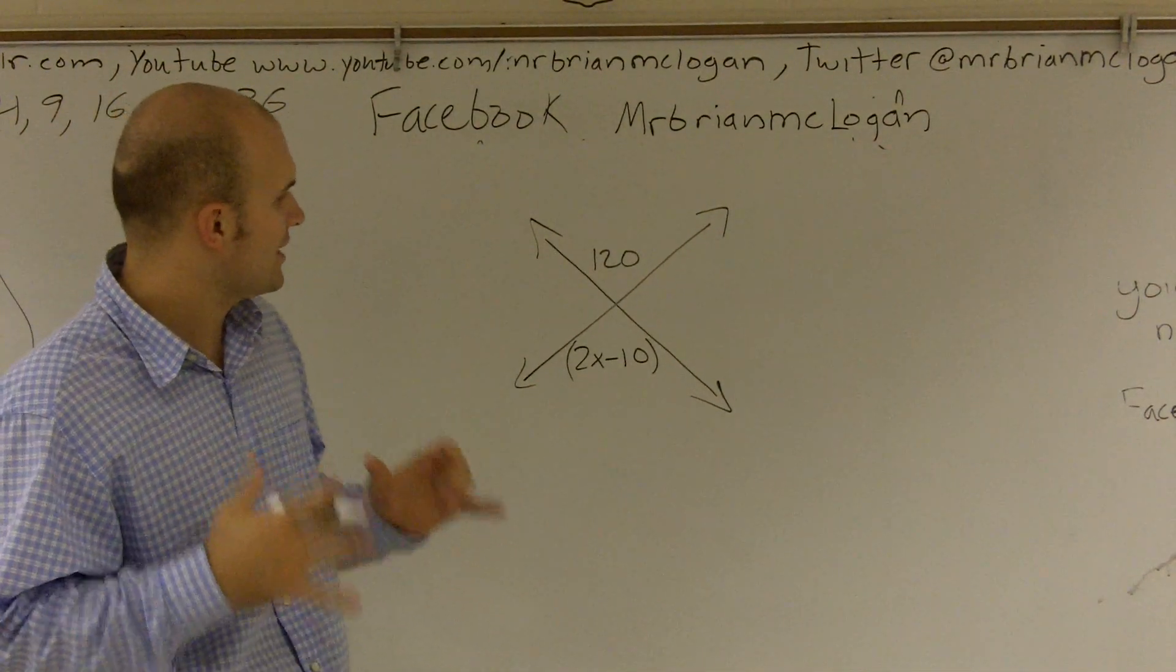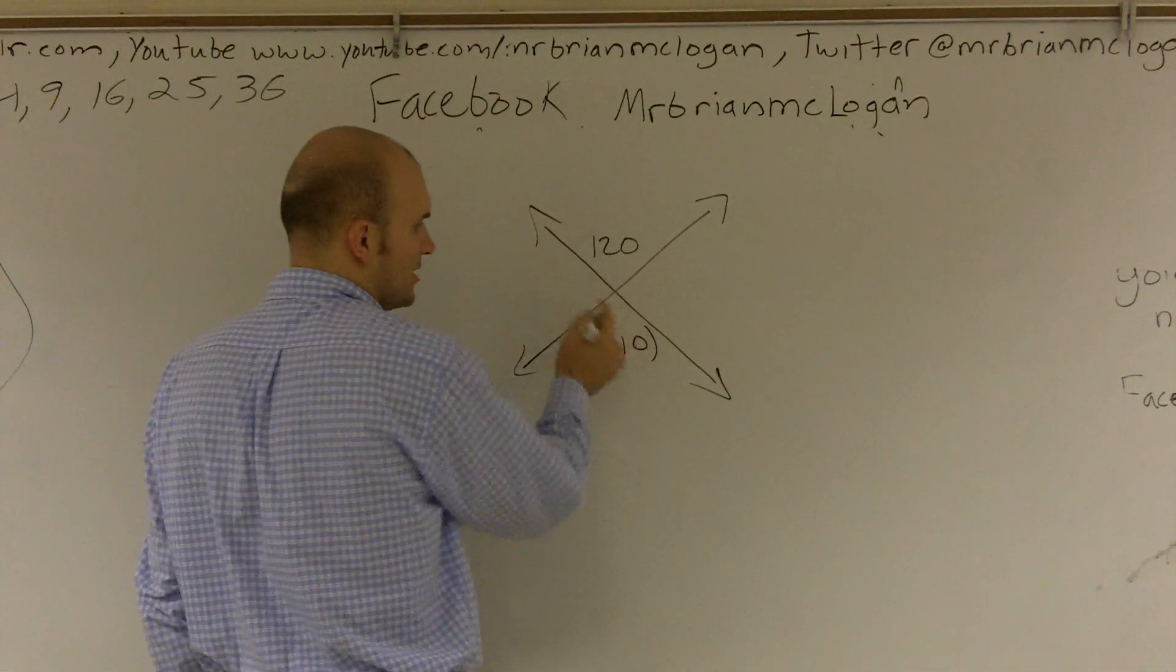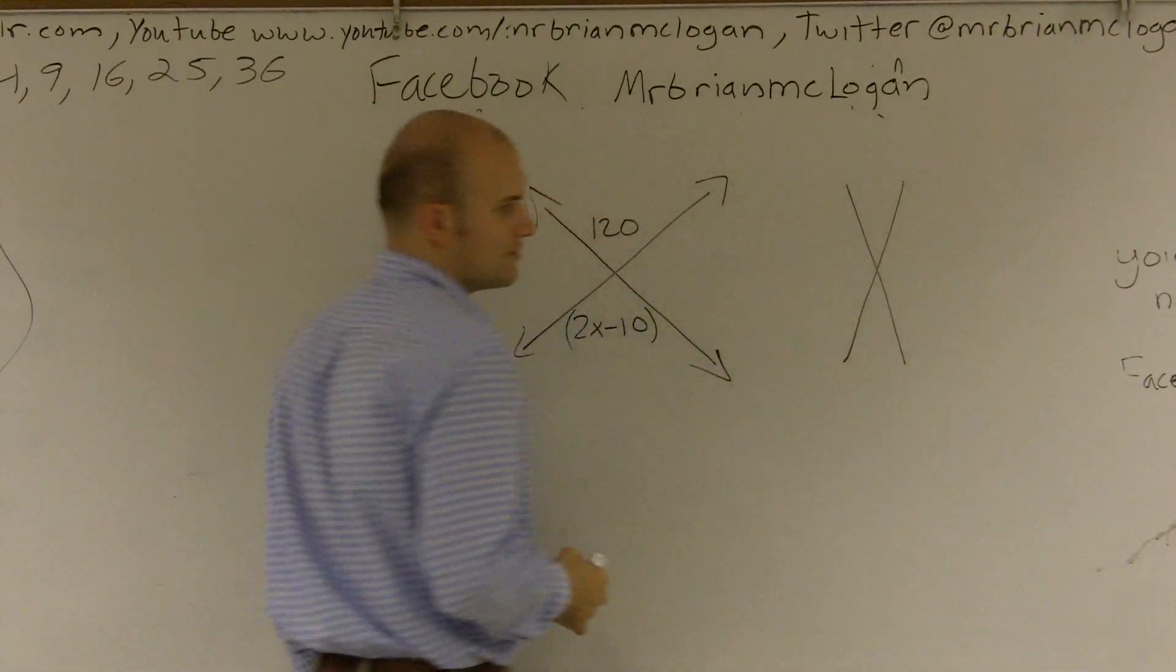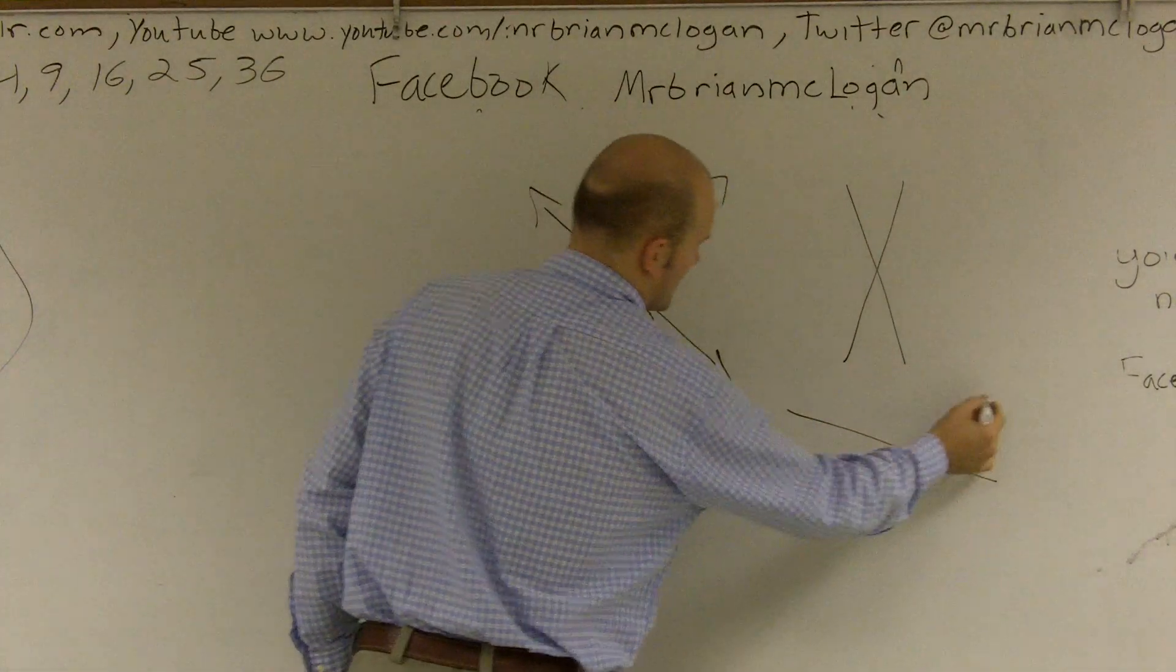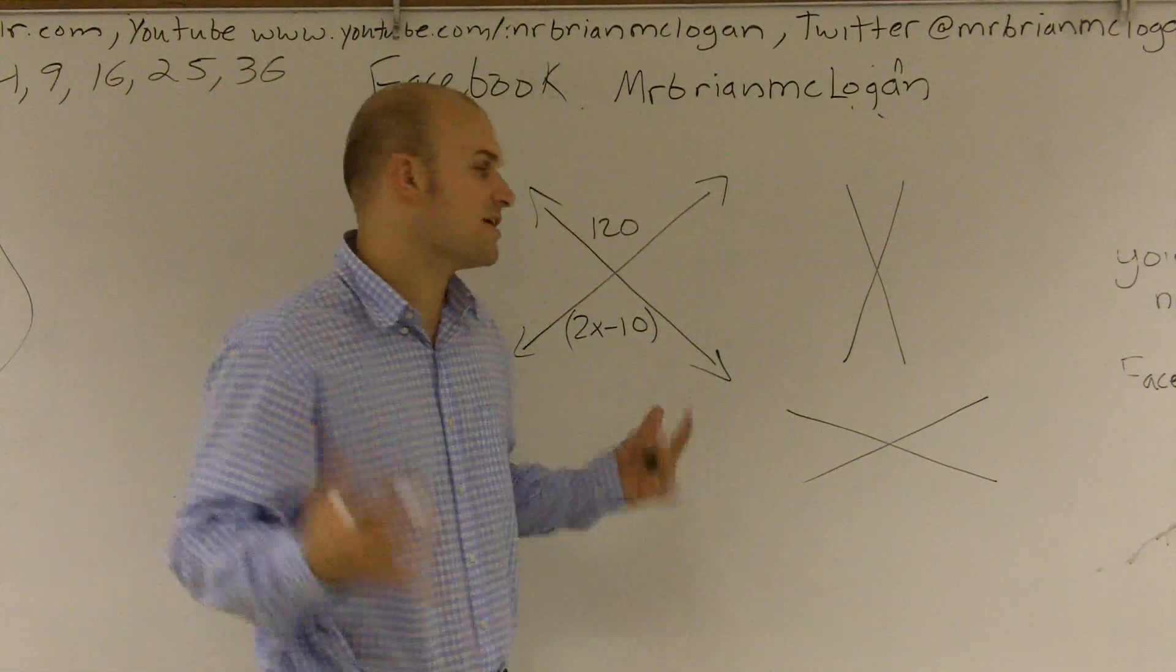Now, there's a very important thing that we can look at when two lines intersect each other. It doesn't matter how they intersect. Here it kind of looks like they're almost at 90 degrees, but we can intersect with some thin angles or some wide angles. But either way we intersect, something very important happens.